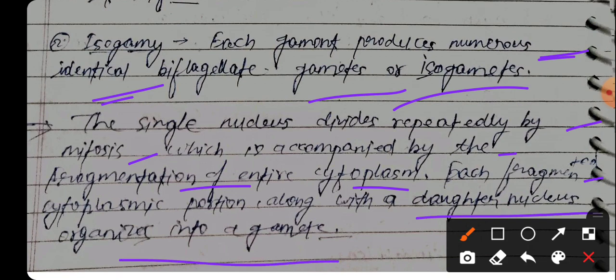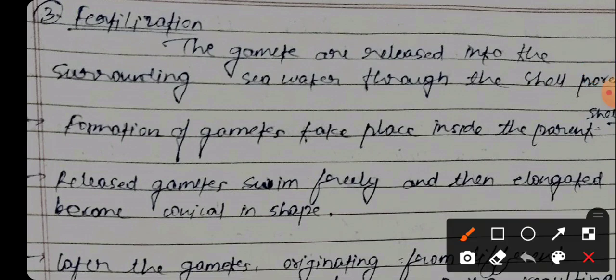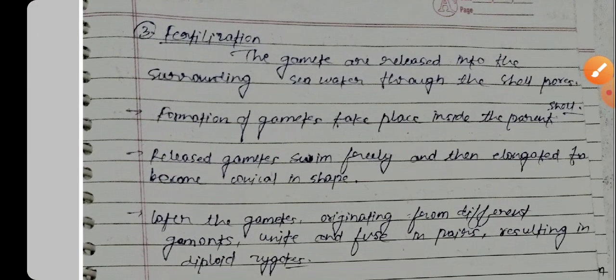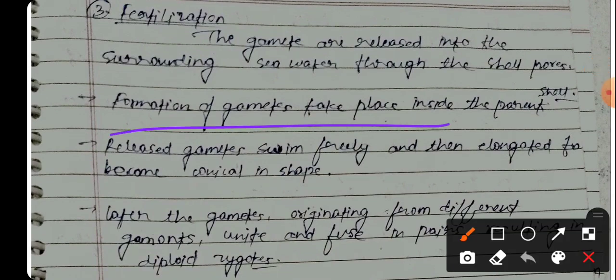The gametes are released into the surrounding seawater through the shell pores. Formation of gametes takes place inside the parent cell, and then released gametes swim freely.